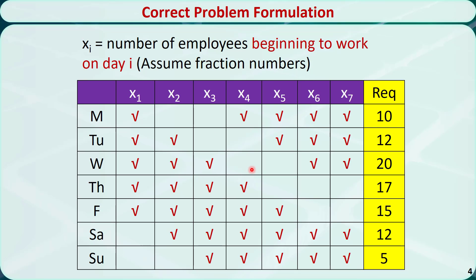x1 represents the number of employees starting to work on Monday. They will work from Monday to Friday. x2 represents the number of employees starting to work on Tuesday. They will work from Tuesday to Saturday, and so on.